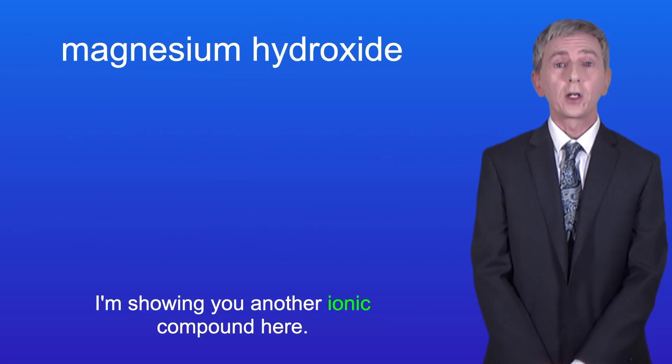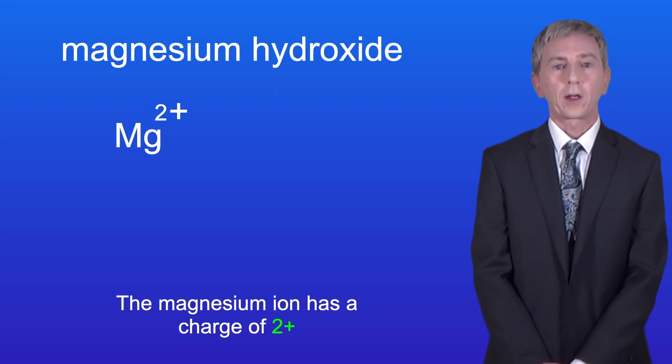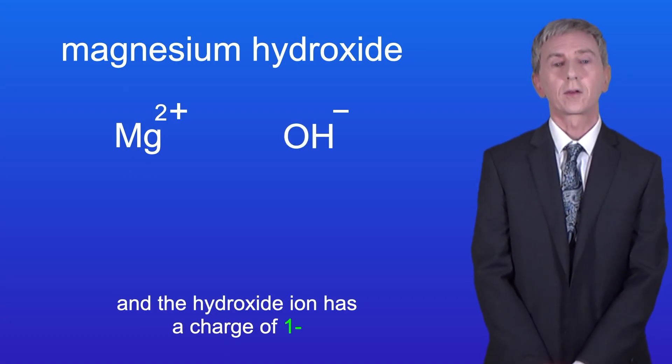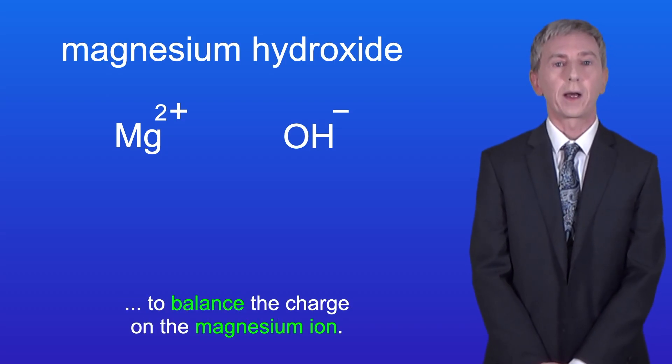Okay, I'm showing you another ionic compound here. This is magnesium hydroxide. The magnesium ion has a charge of 2+ and the hydroxide ion has a charge of 1-. This means that we need two hydroxide ions to balance the charge on the magnesium ion.